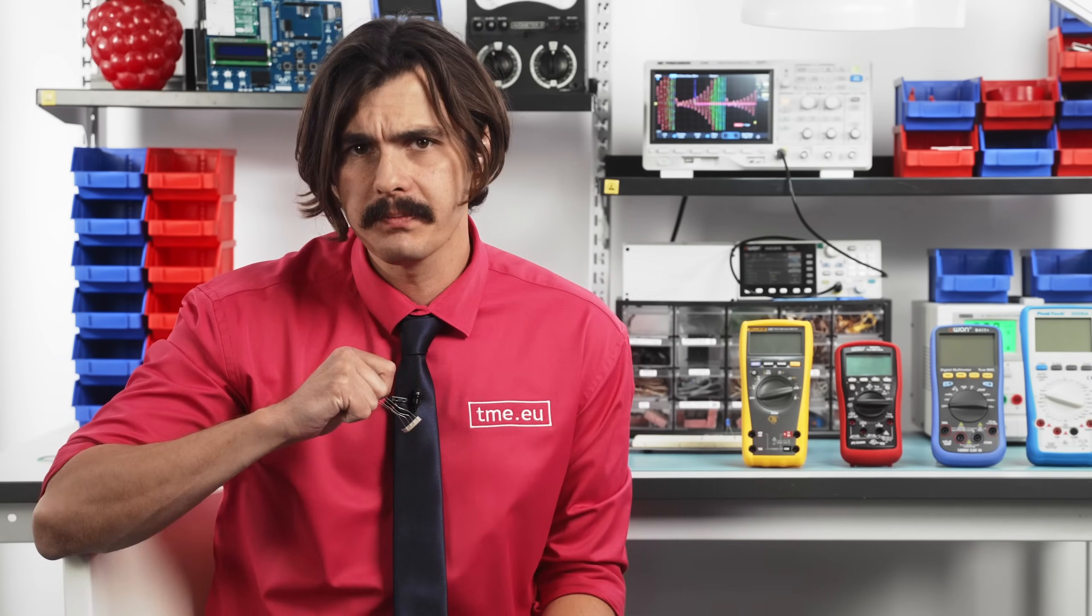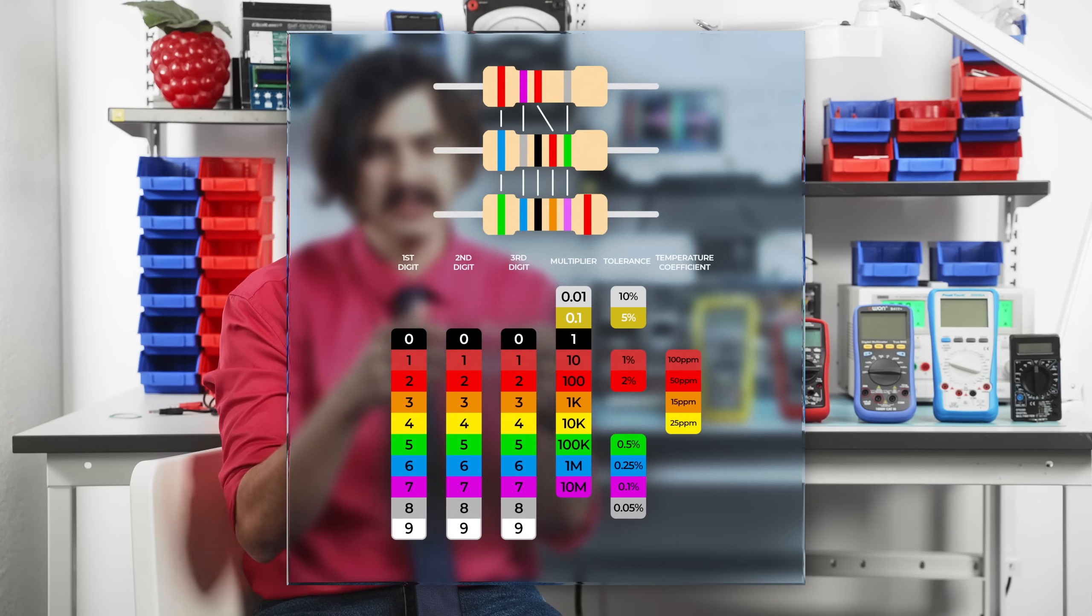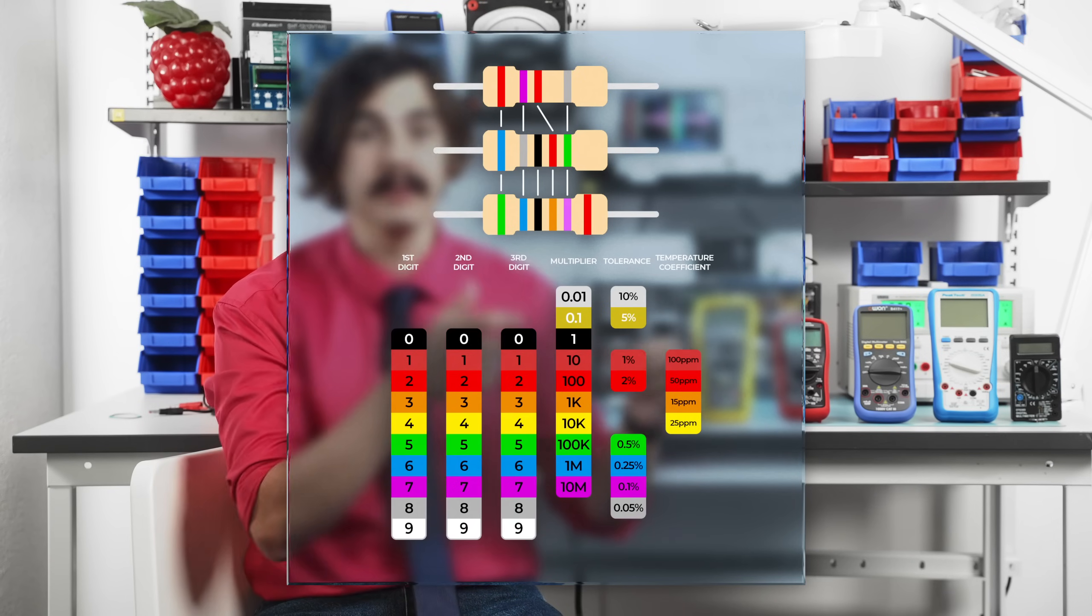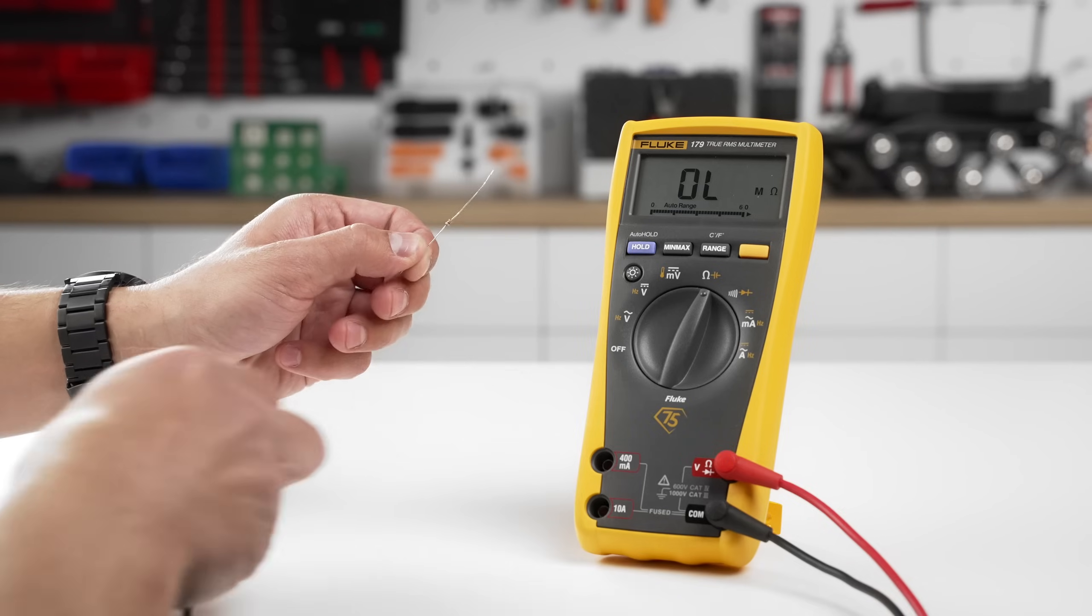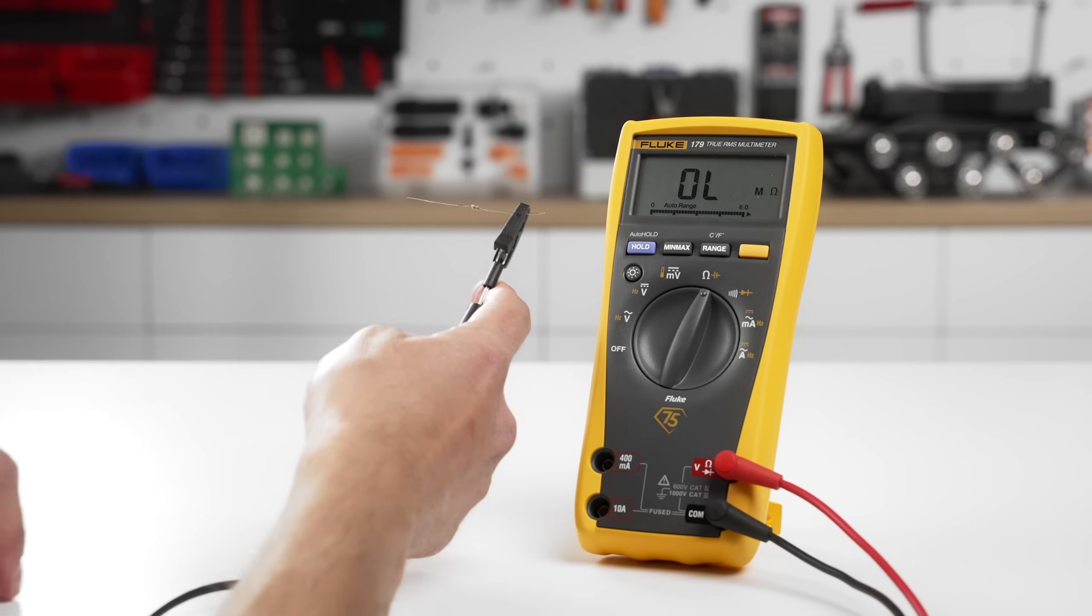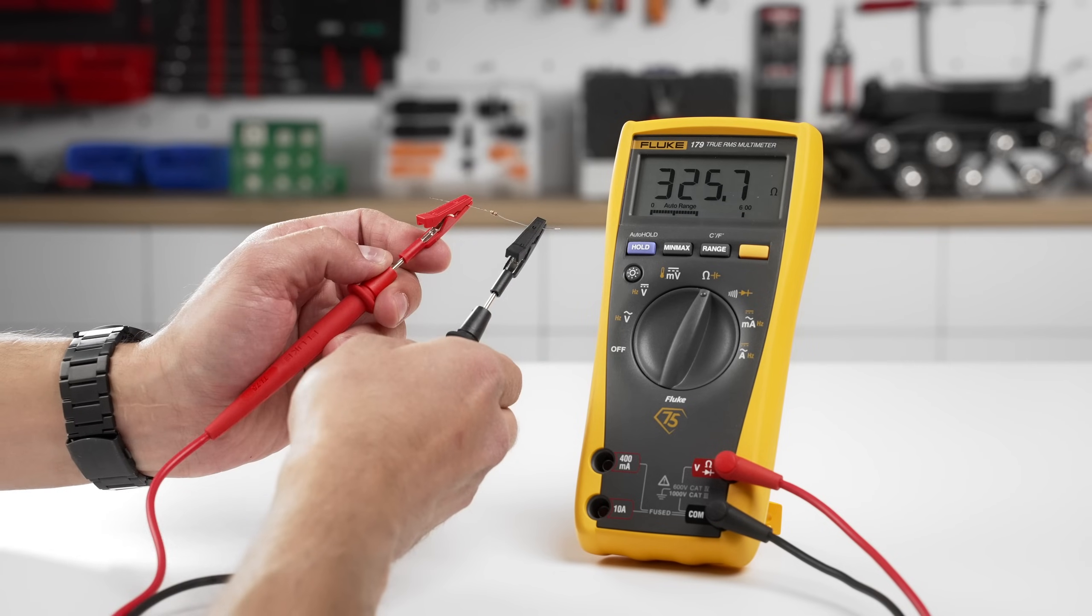But how do you know that this resistor is 330 ohms? Well, trained individuals can read the color bands and just tell by seeing it. But until then, you can measure it with your multimeter. Measurements should be done with the circuit powered off. Place the probe across the resistor to check its value.